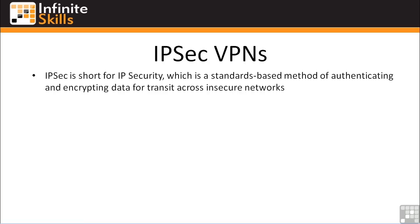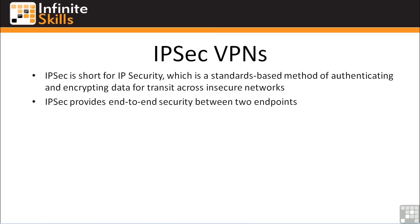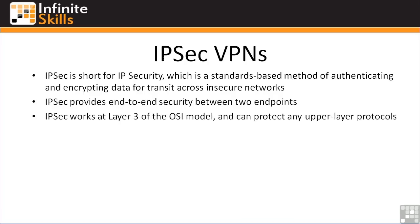IPsec is short for IP Security. It's an open standards-based method of authenticating and encrypting data for transit across insecure networks, i.e., the internet. If configured correctly, IPsec provides end-to-end security between any two endpoints on the VPN tunnel. IPsec works at Layer 3 in the OSI model and can protect any upper-layer protocol, so it doesn't really matter if you're using TCP or UDP — so long as it's part of the IP protocol suite, you can encrypt it with IPsec.